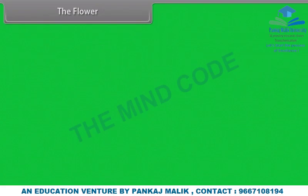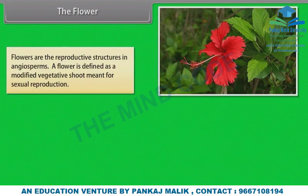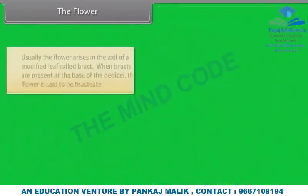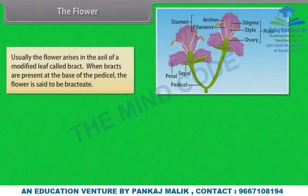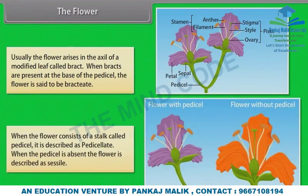Flowers are the reproductive structures in angiosperms. A flower is defined as a modified vegetative shoot meant for sexual reproduction. The flower consists of a very short axis on which whorls of different parts arise. Usually the flower arises in the axil of a modified leaf called bract. When bracts are present at the base of the pedicel, the flower is said to be bracteate. When the flower consists of a stalk called pedicel, it is described as pedicillate. When the pedicel is absent, the flower is described as sessile.